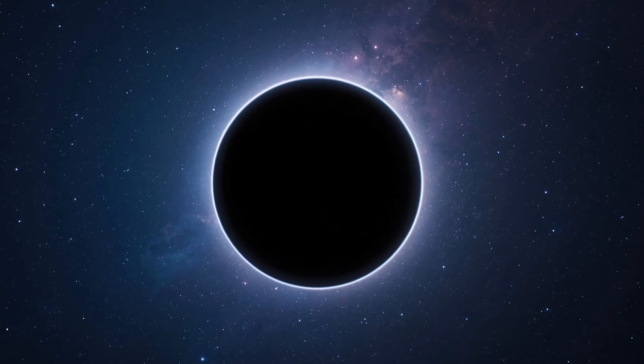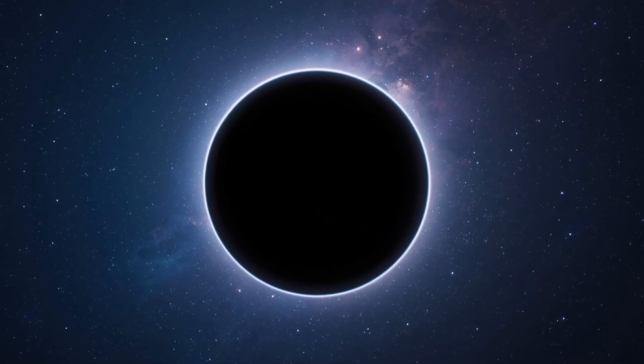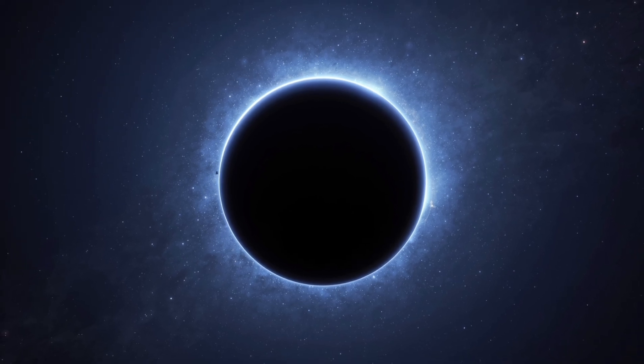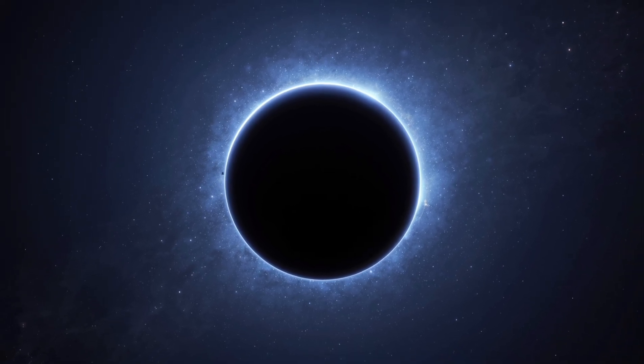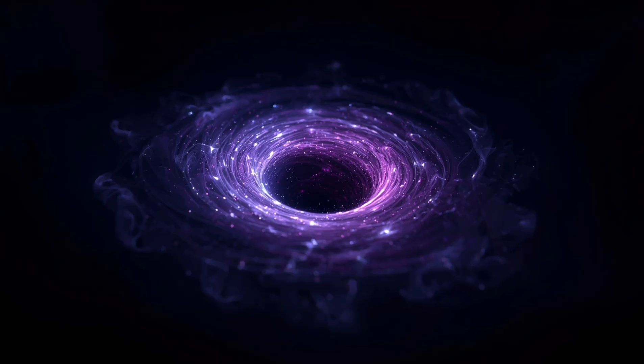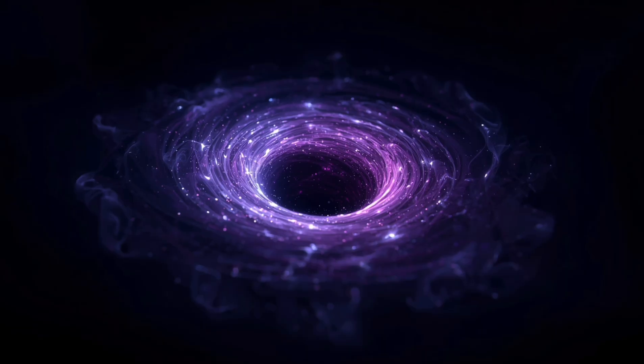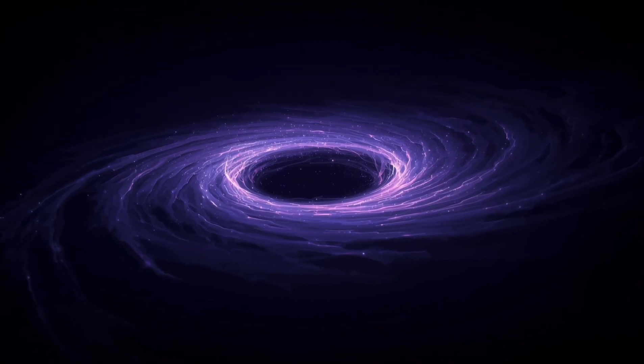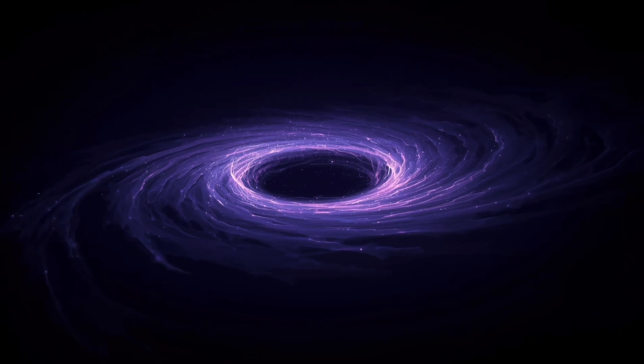In discussing Ton 618, one must also consider its event horizon, the sphere beyond which nothing, not even light, can escape the gravitational pull. The diameter of Ton 618's event horizon may exceed 400 billion kilometers, making it one of the largest known structures bound by gravity. Inside this region lies a singularity, a point where space and time become so warped that they cease to behave in terms of classical physics.